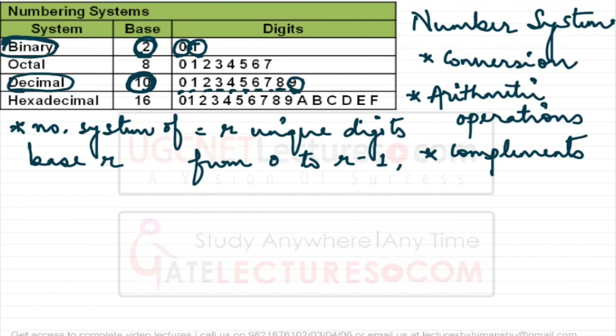We are all familiar with the decimal number system — it has 10 unique digits, 0 to 9. In binary, you will see numbers like 0110. This is a binary number.